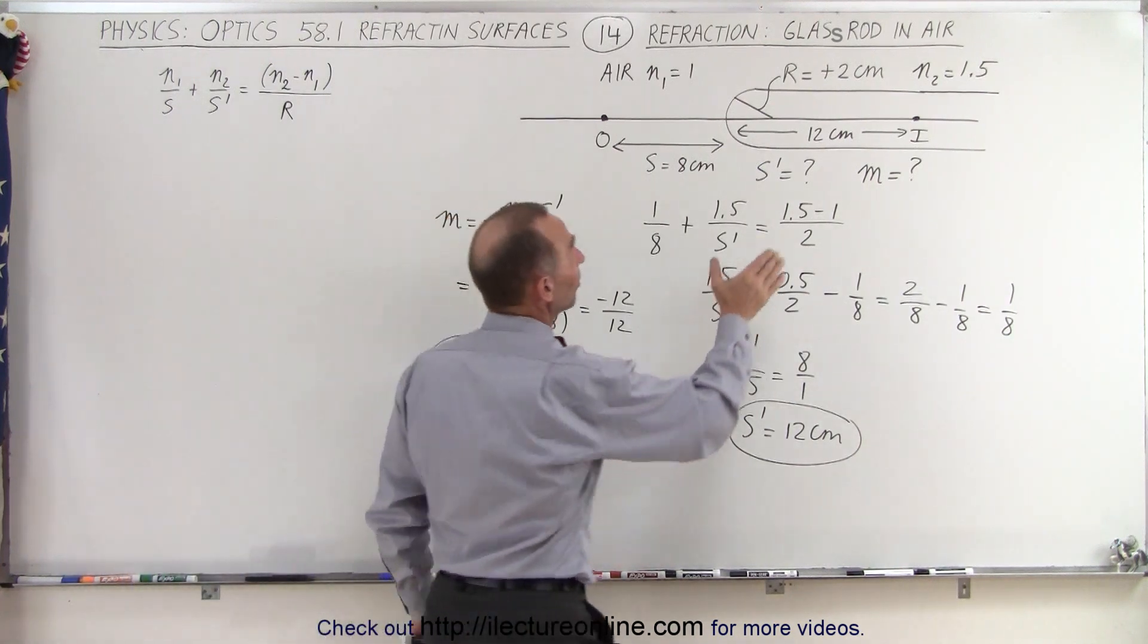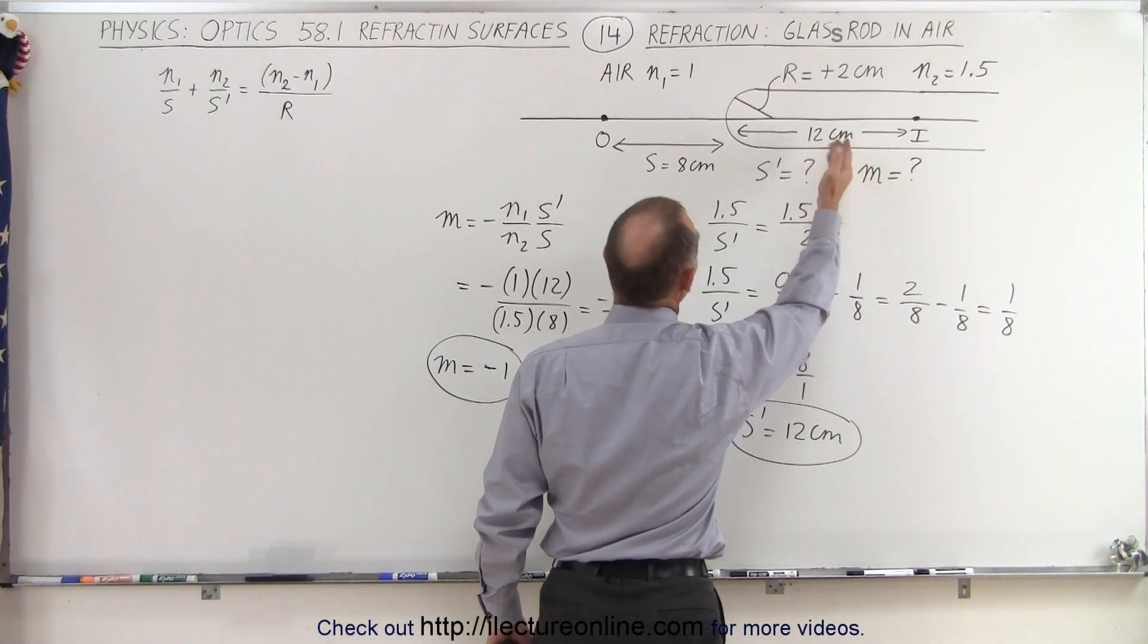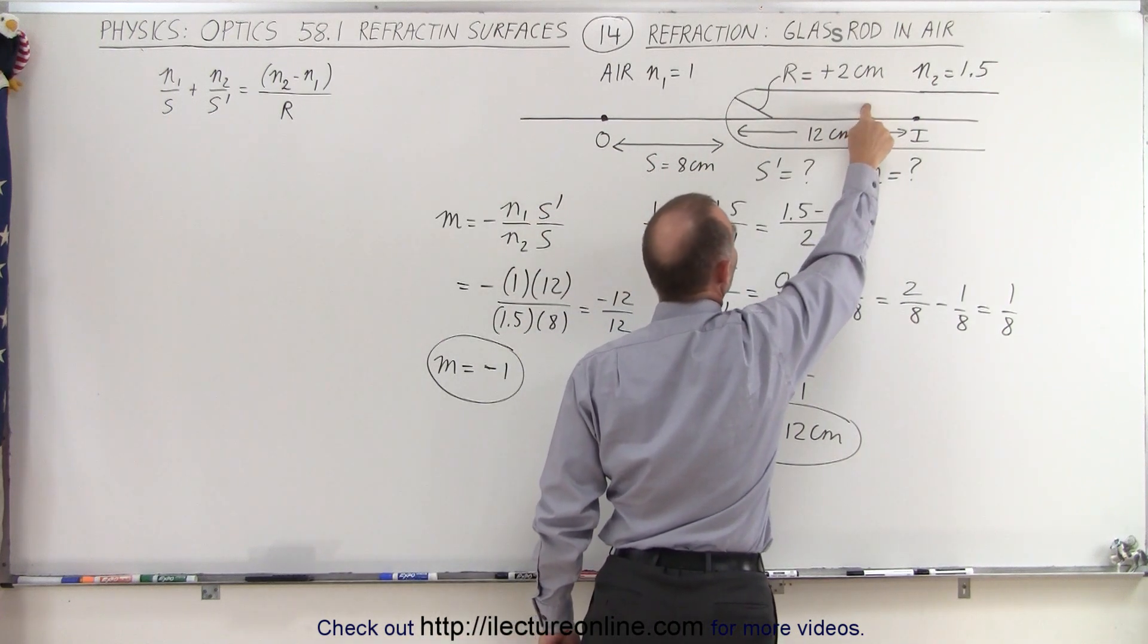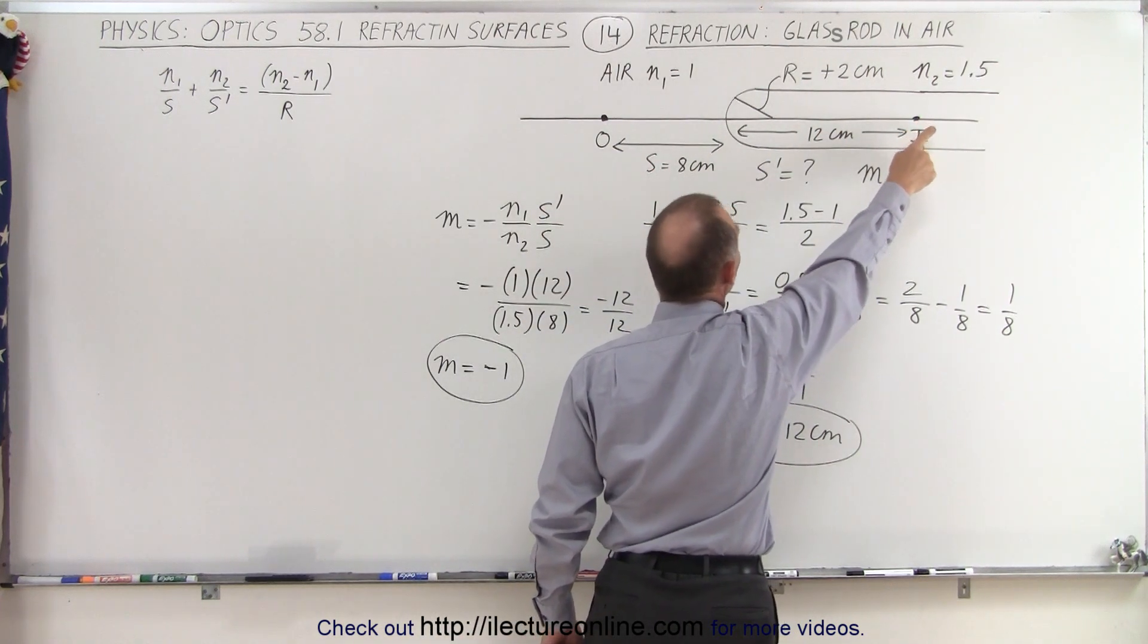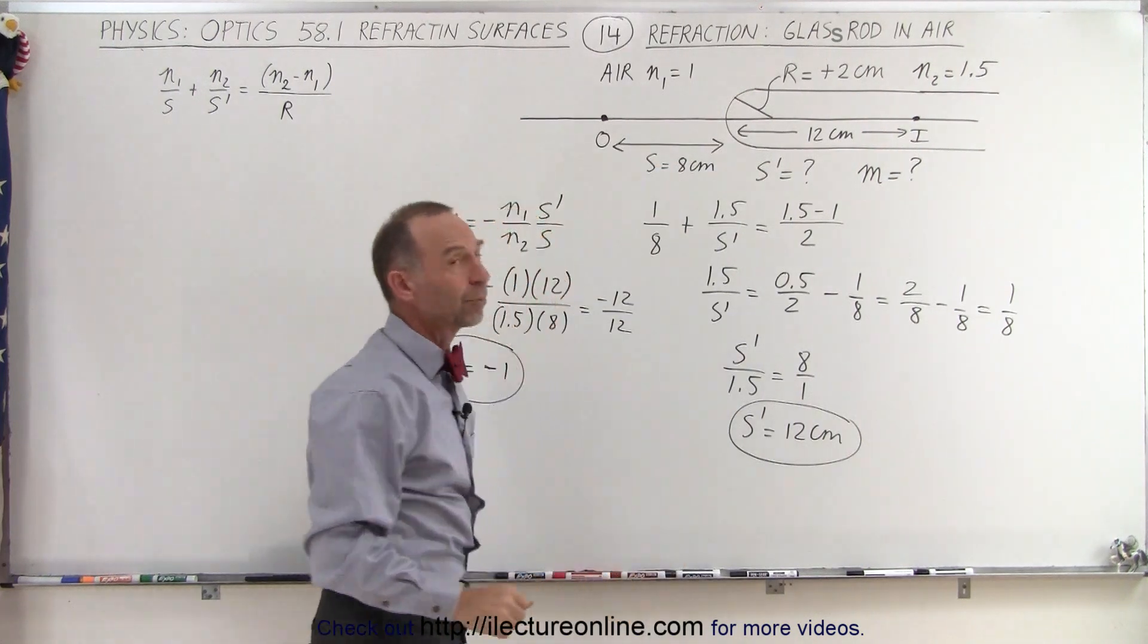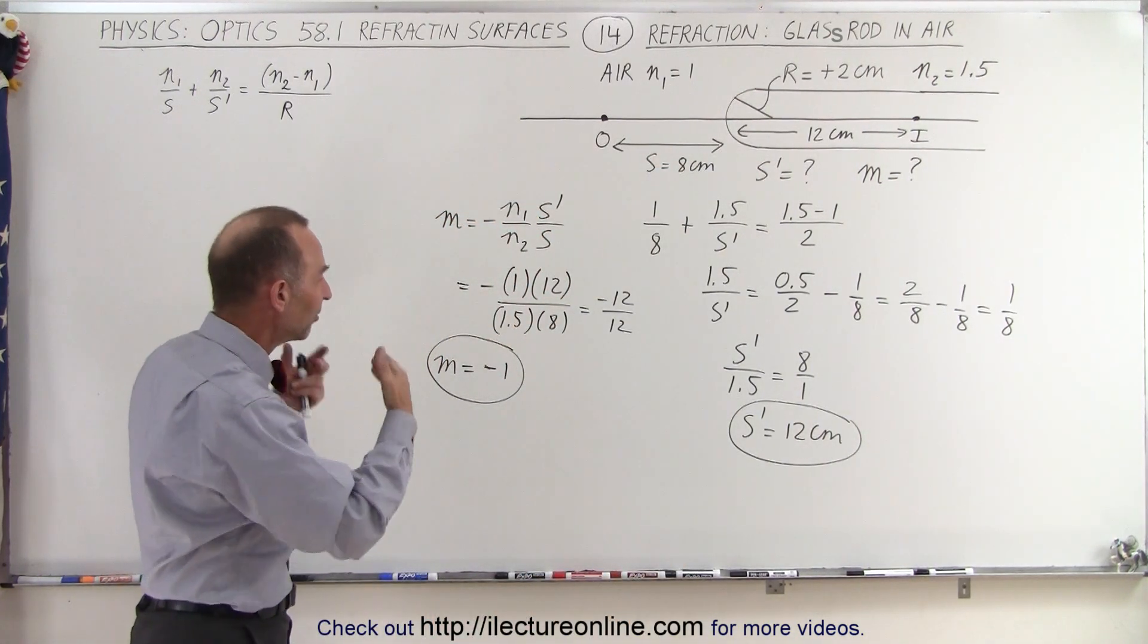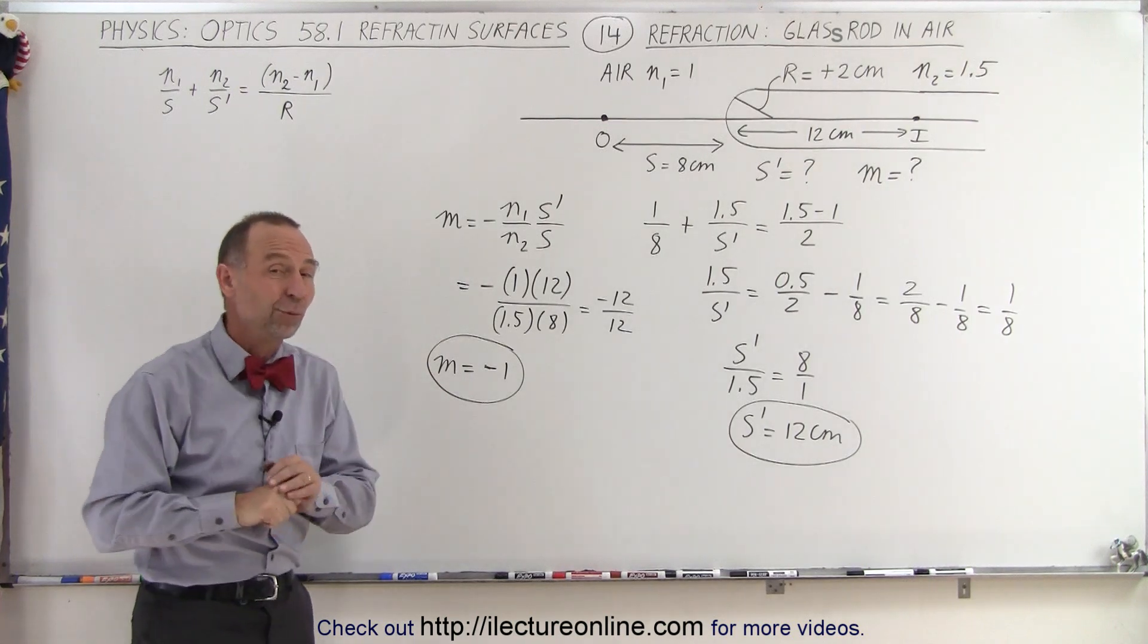which is interesting, since the distance to the image is 1.5 times the distance to the object, but also remember that the index of refraction where the image is at is 1.5 times the index of refraction where the object is at. So that kind of cancels out that ratio of s prime over s, and it turns out we have a magnification of 1.